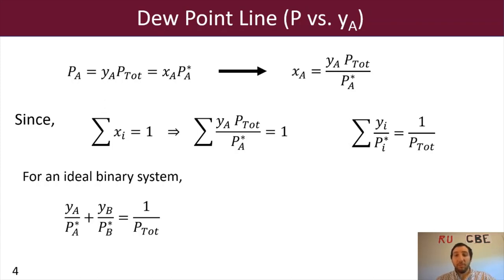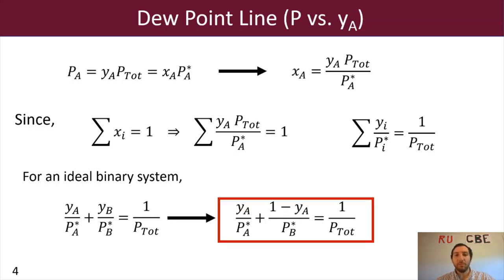And as we did before with our bubble point line, we can now solve for YB in terms of YA. And so we would have YA over PA star plus 1 minus YA over PB star equals 1 over P total.